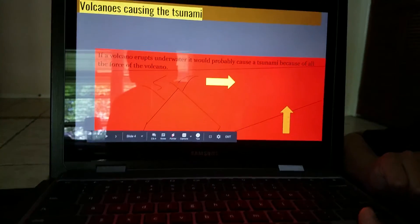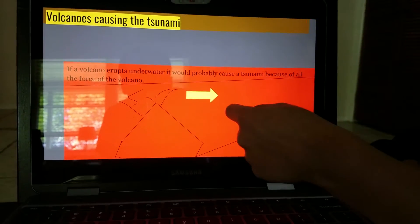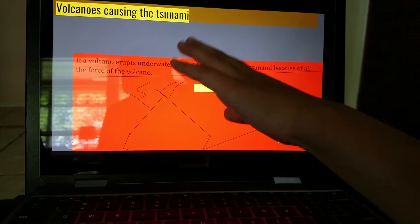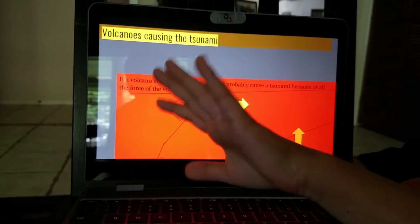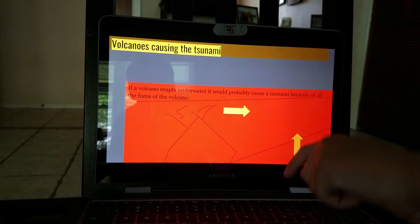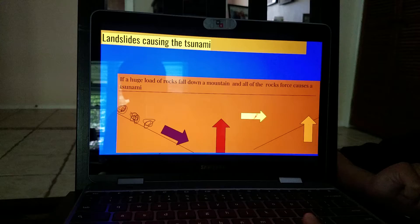And volcanoes causing the tsunami. This is when the volcano erupts underwater. It pushes all that water in all directions. And then this is the pressure of land. You saw that in all the other diagrams too.